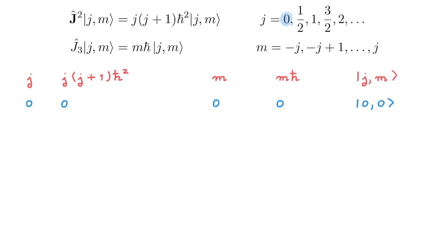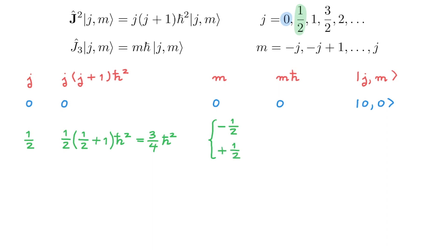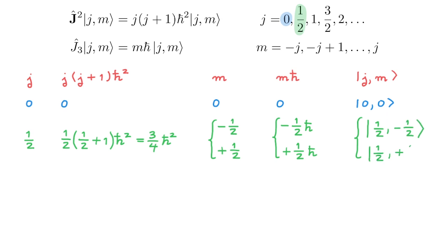The next possible j value is j = 1/2. For the j squared eigenvalue, we plug in 1/2, which gives 3/4 ħ². There are two possible values of m: the first is −j = −1/2, and the second is +j = +1/2. These two m values give two possible eigenvalues: −1/2 ħ and +1/2 ħ. There are two eigenstates for j = 1/2, which are |1/2, −1/2⟩ and |1/2, +1/2⟩.